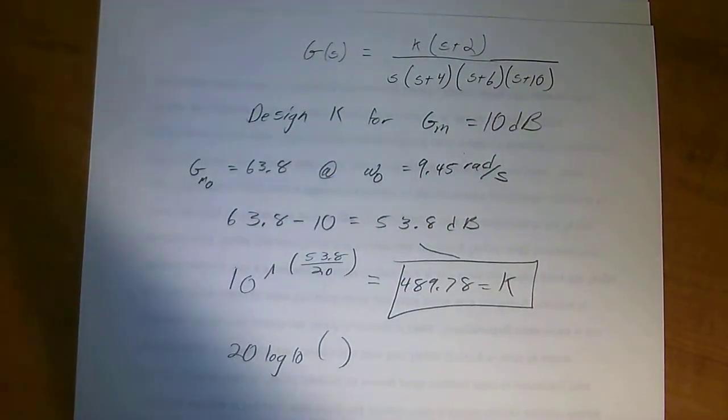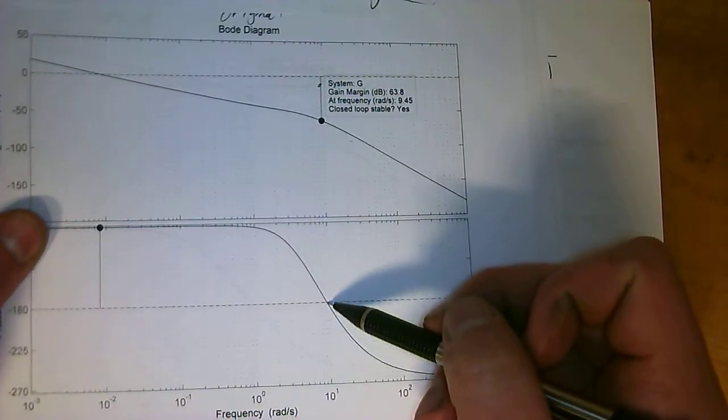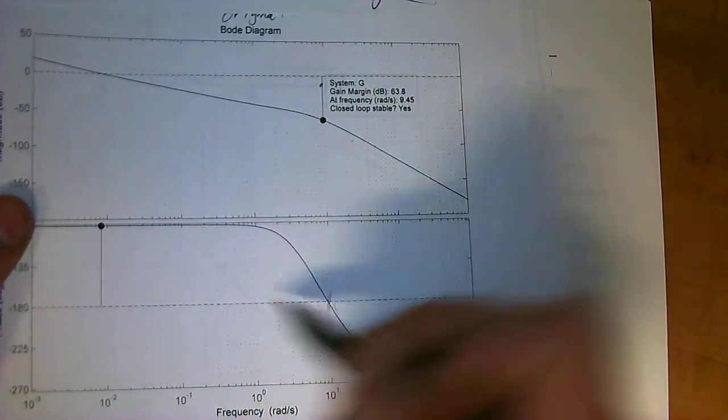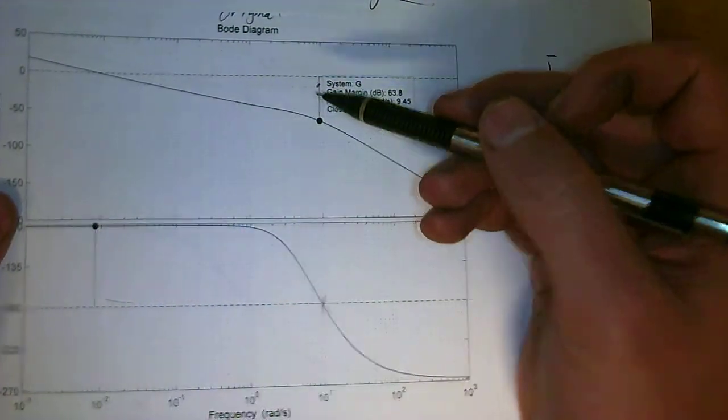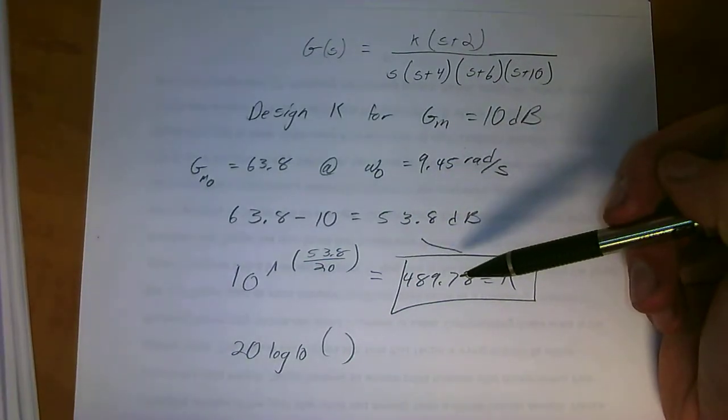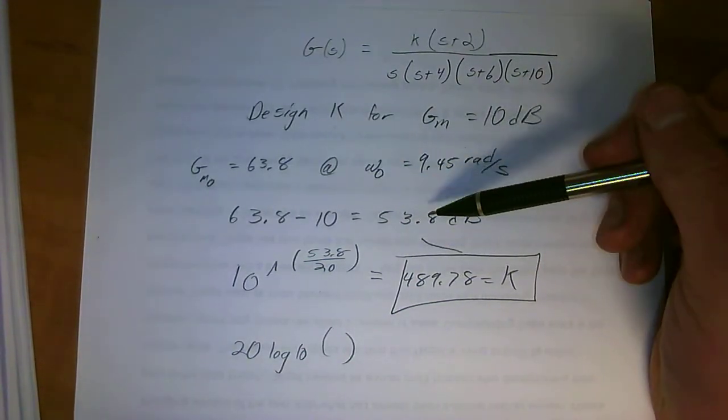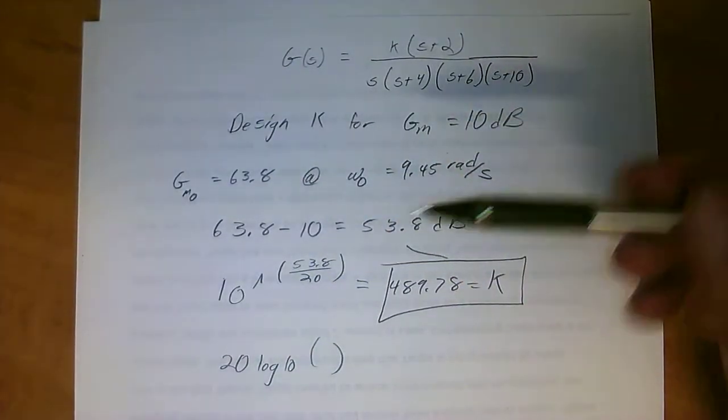All you have to do is figure out what your current gain margin is, which is found by where the phase plot crosses the negative 180 degree axis. Figure out what the gain margin is in dB, find the difference to get the required shift, and then use the conversion to get the actual gain.